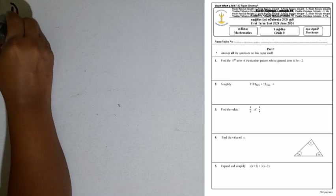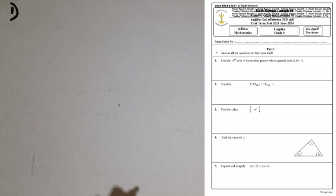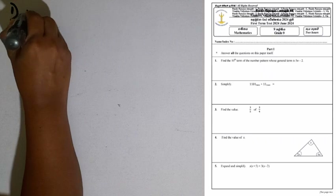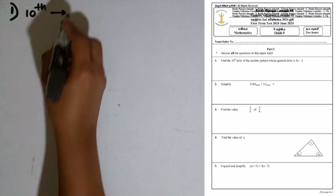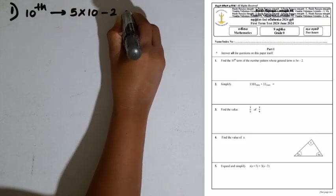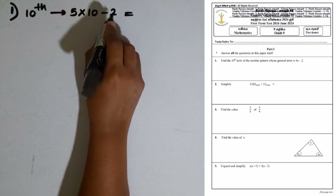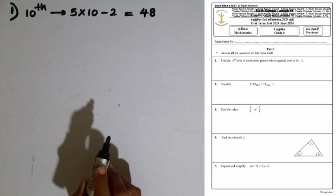Question number 1: find the 10th term of the number pattern whose general term is 5n minus 2. We are given the general term, so we can find any term by substituting the value for n. If you want to find the 10th term, we substitute 10 for n. 5 multiplied by 10 minus 2: 5 into 10 is 50, then 50 minus 2 is 48. So the 10th term of this number pattern is 48.